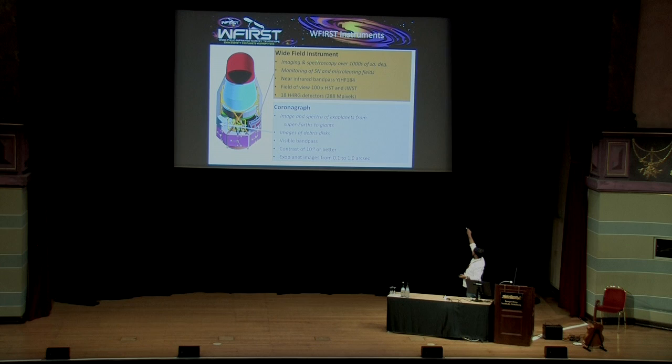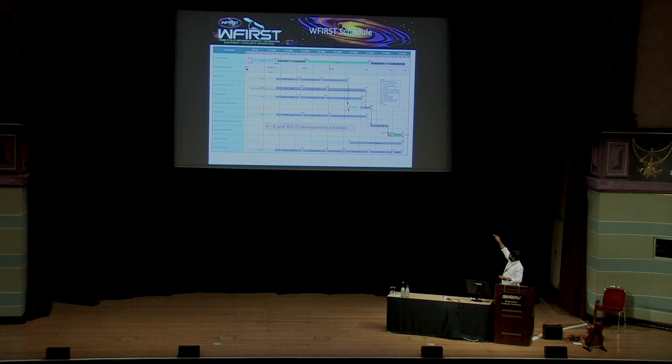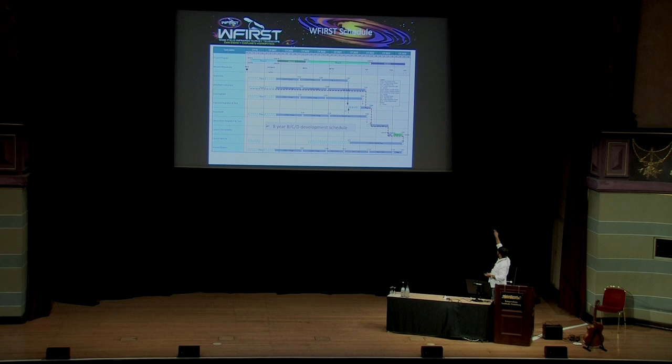WFIRST will have a wide-field instrument with something like 280 million pixels, 18 H4RG detectors, and a coronagraph with contrast of 10 to the minus 9 or better. WFIRST is currently in Phase A; if it passes reviews next year it will move to Phase B, with an eight-year development timescale and launch expected around 2025. WFIRST will essentially launch after roughly five years of surveying with Euclid, so the Euclid dataset will also add to WFIRST science.